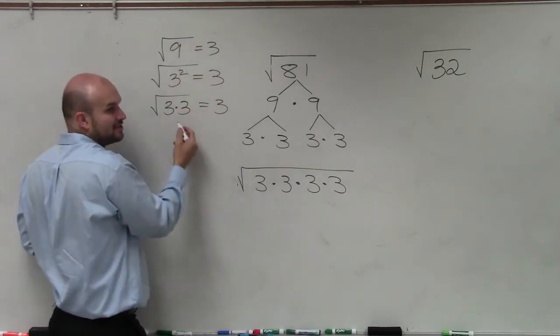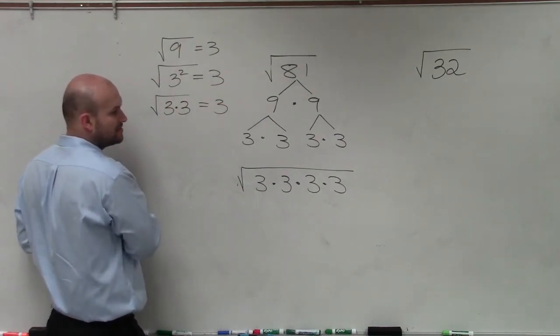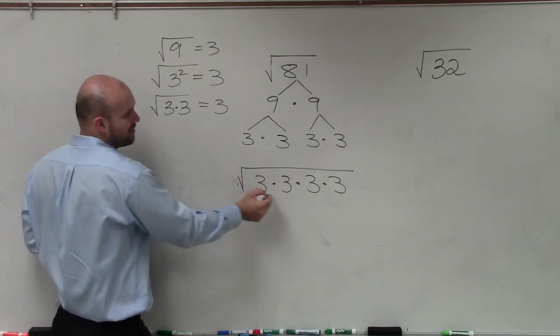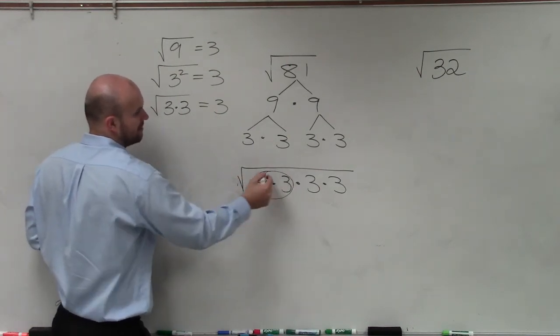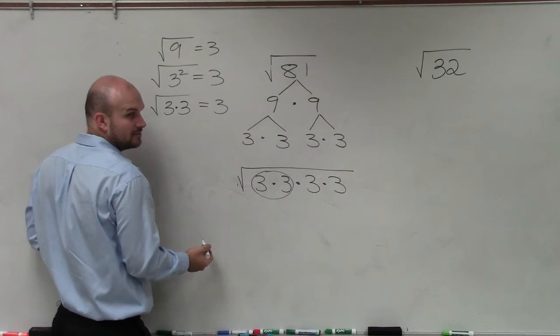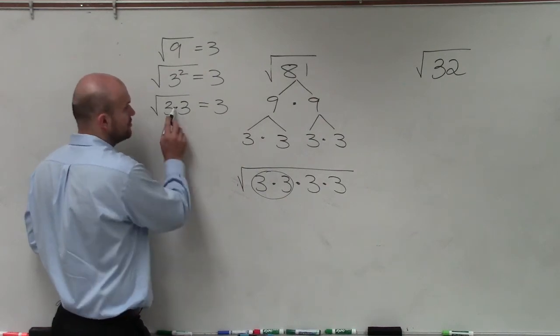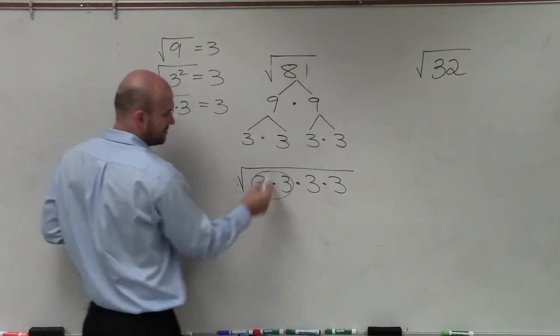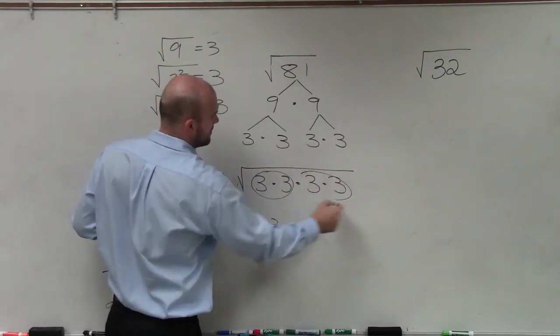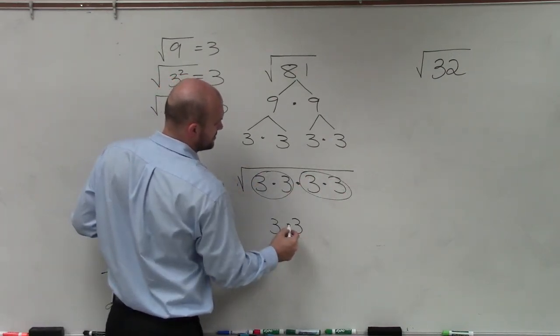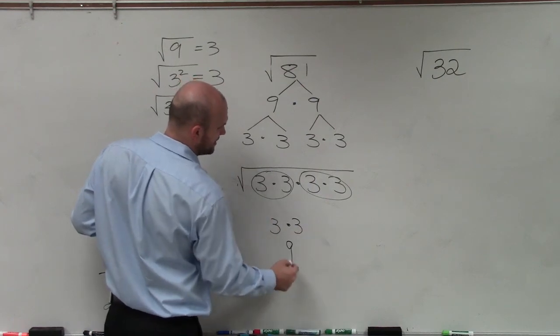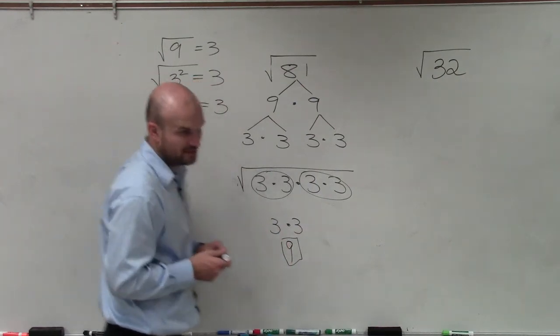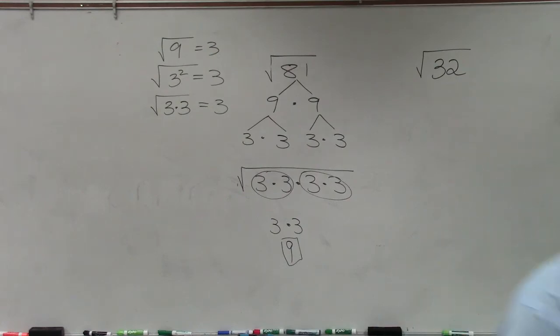So what it means is anytime I take the square root of a pair, that's just going to equal whatever that value is, right? So then it's just 3. I can take out 2 of them times 3, which leaves me with 9. Does that kind of make a little sense? So we'll use that logic.